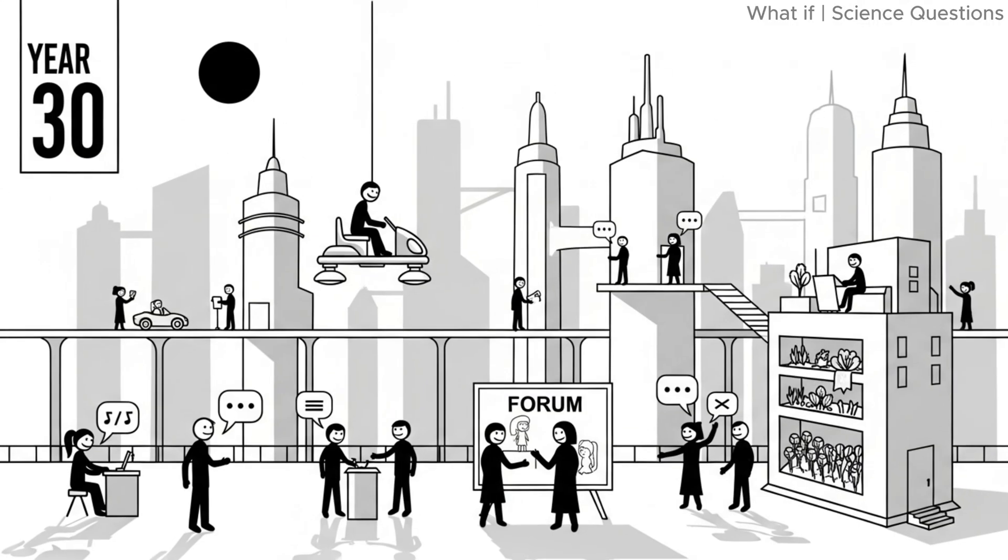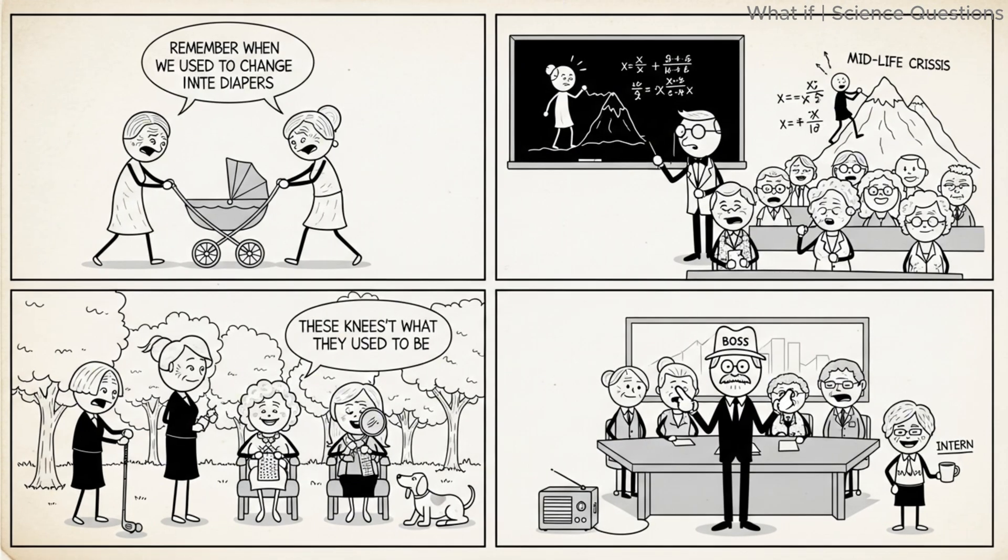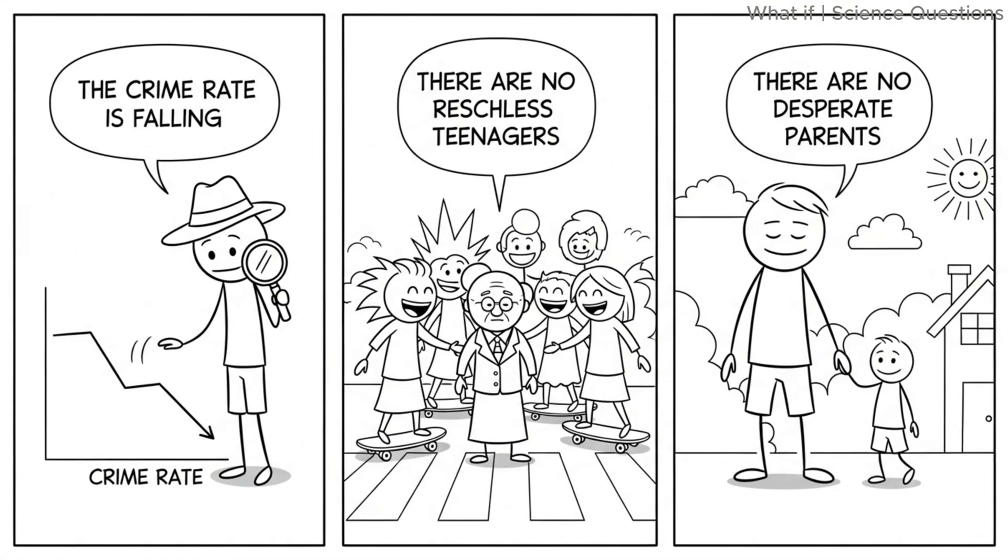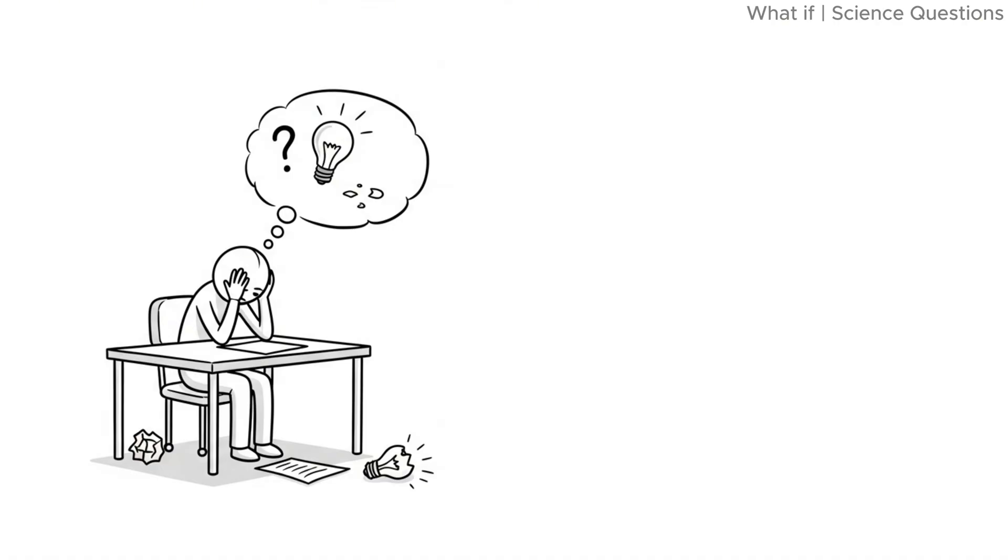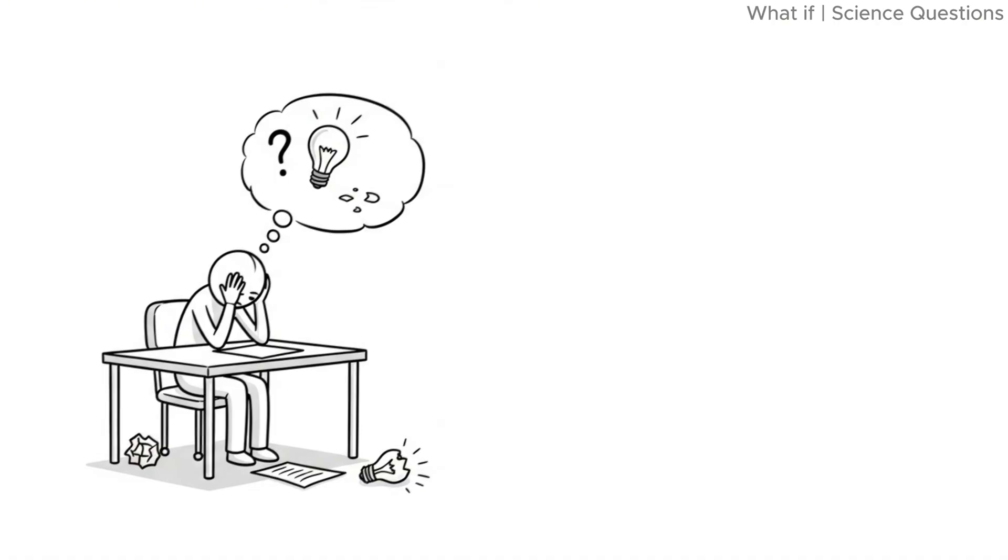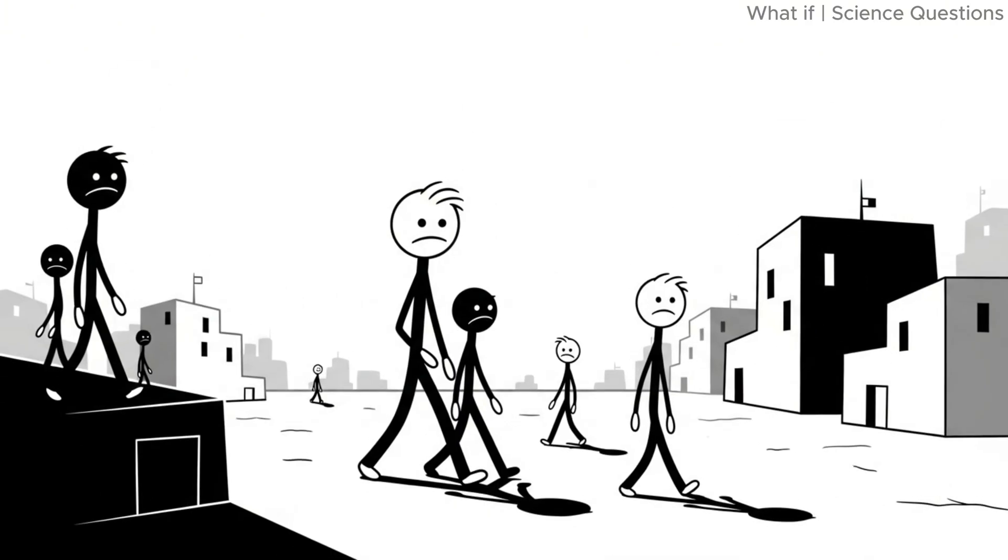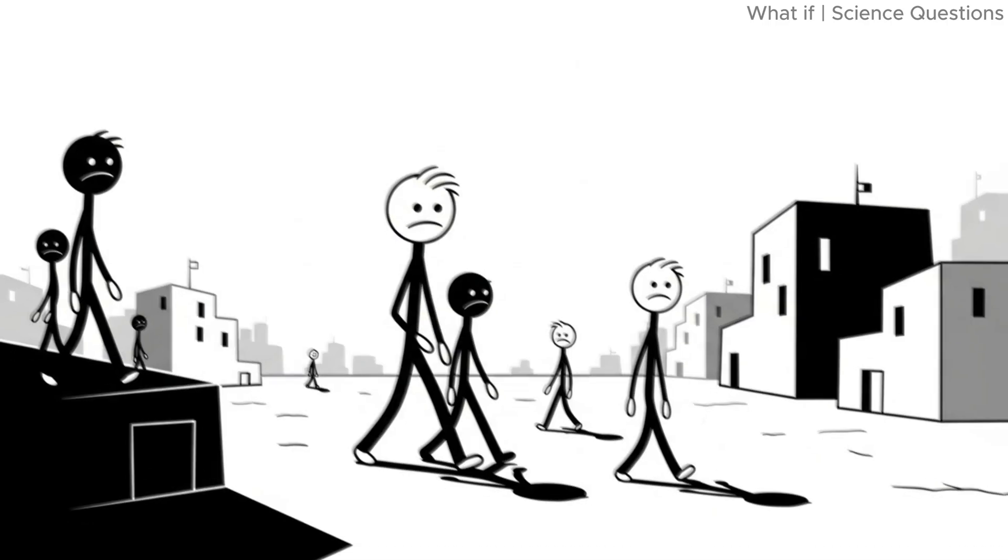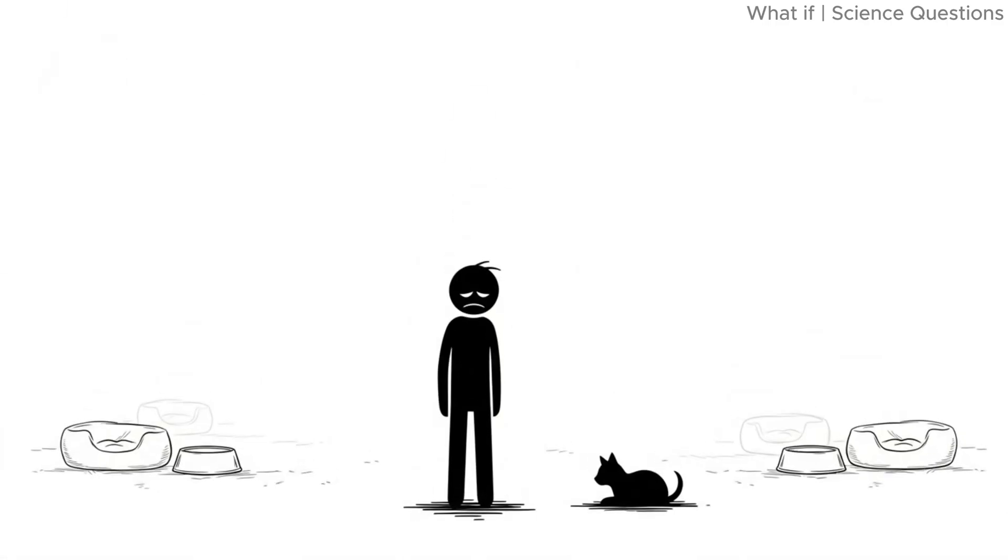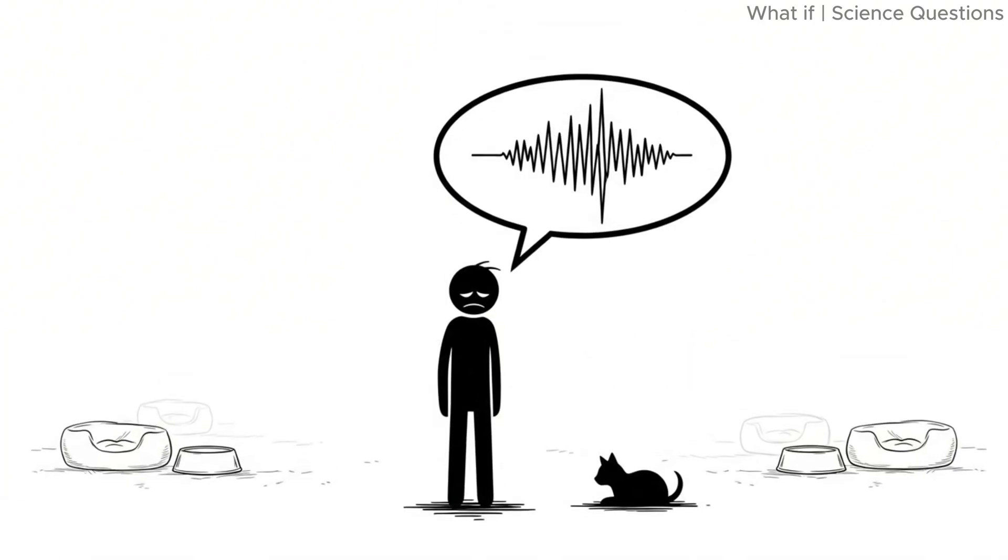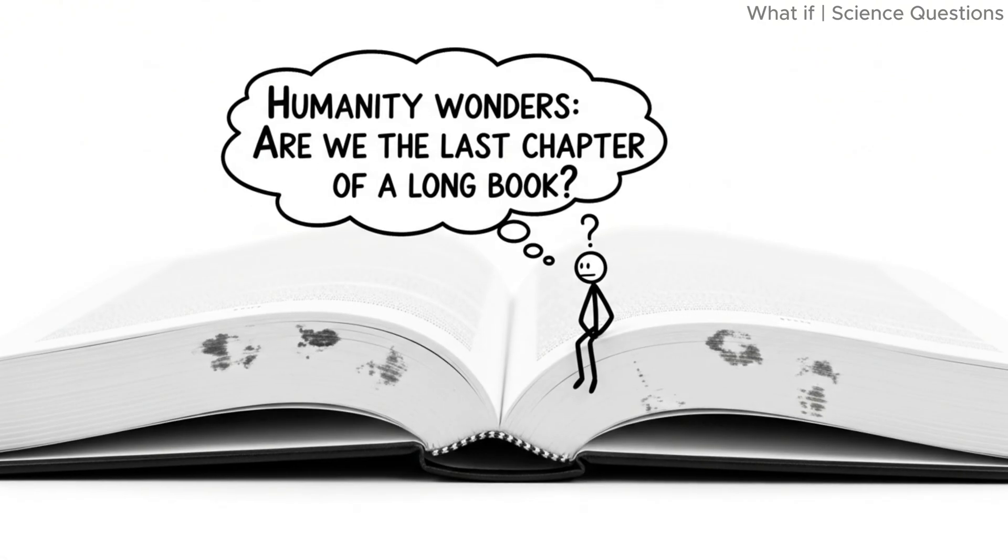Year thirty. New society. A world where no one is under thirty changes everything. Crime drops. There are no reckless teens or desperate parents. Creativity declines. Youth innovation disappears. Politics shifts. Older generations hold all power. The world becomes stable, but slow and emotionally empty. Pets, once comforting, also stop being born. The silence grows heavier. Humanity wonders, are we the last chapter of a long book?